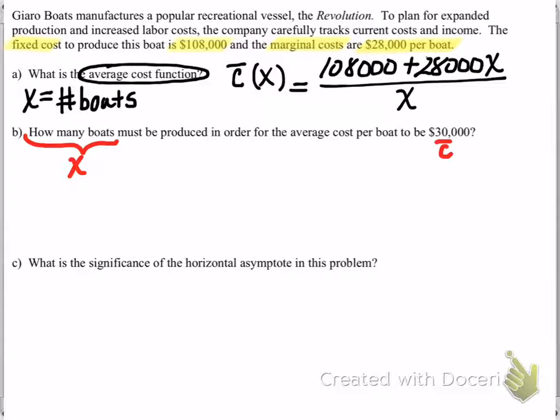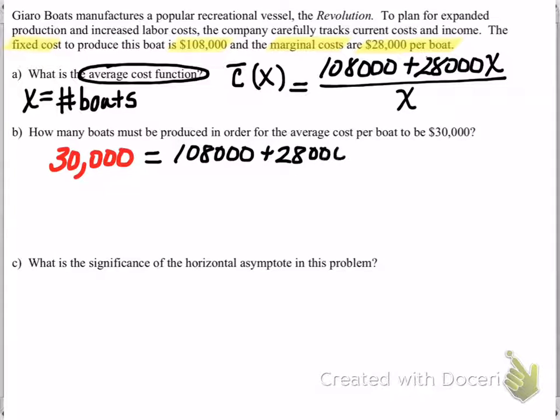So with substitution here, we see then that we'll just substitute that $30,000 in for our average cost. So $30,000 is equal to $108,000. Again, those were the fixed costs plus the amount it costs us to produce each boat, our marginal cost, all divided by x. And so we're looking to solve this equation for x.